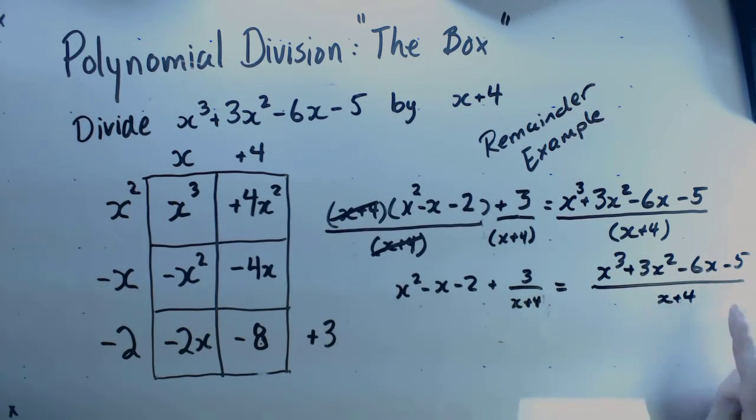And so this division expression is equal to this quadratic plus this little bit of remainder that doesn't really nicely get divided by x + 4.